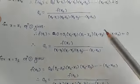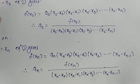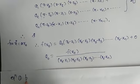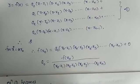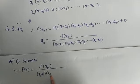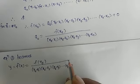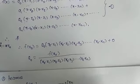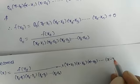Re-substituting these values of a0, a1, a2, ..., an into equation 1, we get the Lagrange's interpolation formula. The first term becomes: f(x0) / [(x0 − x1)(x0 − x2)(x0 − x3)···(x0 − xn)] multiplied by (x − x1)(x − x2)(x − x3)···(x − xn).